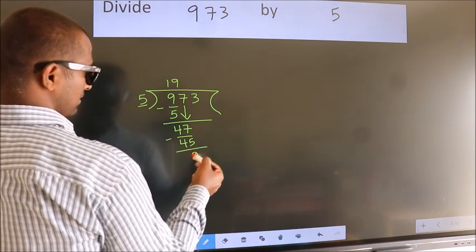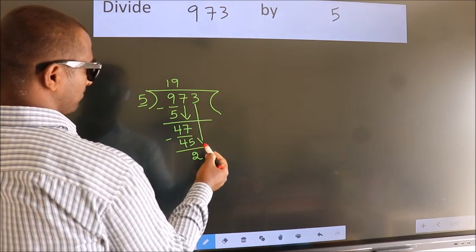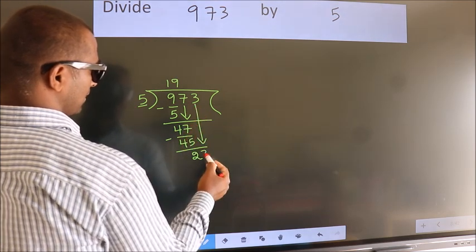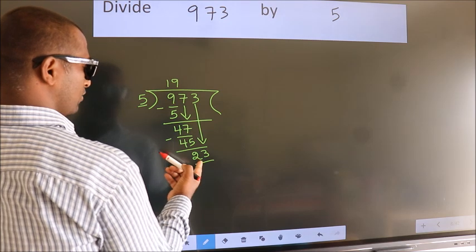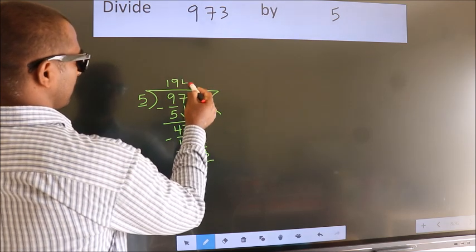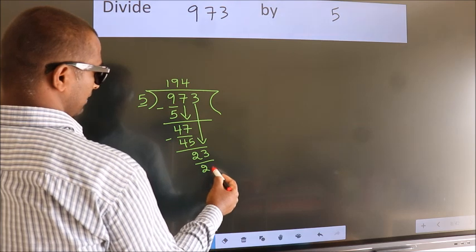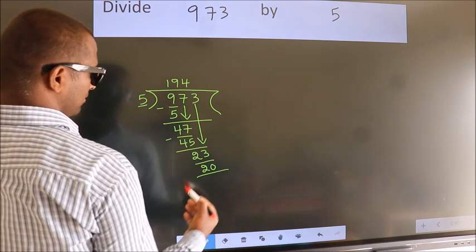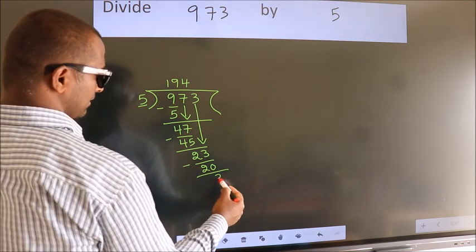After this, bring down the beside number. So 3 down, so 23. A number close to 23 in 5 table is 5 fours 20. Now we subtract. We get 3.